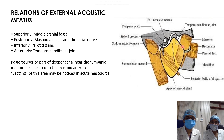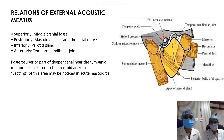The relations of the external acoustic meatus: superiorly, it is related to the middle cranial fossa. Posteriorly, there is the mastoid air cell system and the facial nerve exiting the stylomastoid foramen. Inferiorly, there is the parotid gland. Anteriorly, there is the temporomandibular joint. The posterior part of the deep canal near the tympanic membrane is related to the mastoid antrum, and sagging of this area occurs in acute mastoiditis.